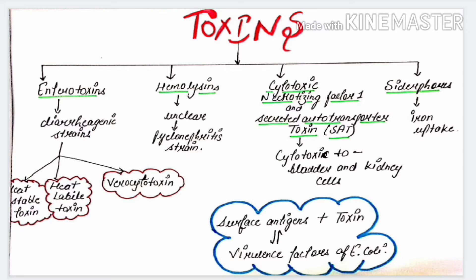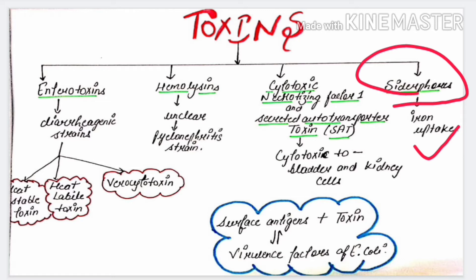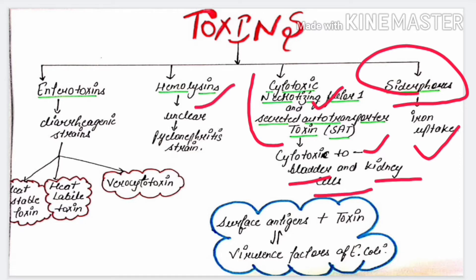E. coli produces four types of toxins: enterotoxin, hemolysin, cytotoxic necrotizing factor, and secreted auto-transporter toxin (SAT). It also produces siderophores, which help in iron uptake — bacteria require iron for growth and development. Cytotoxic necrotizing factor and SAT are cytotoxic to bladder and kidney cells. The role of hemolysin is still unclear but it is supposed that pyelonephritis strains possess this toxin.